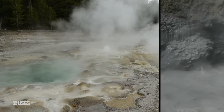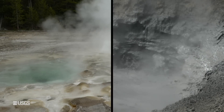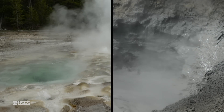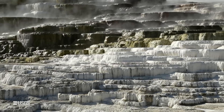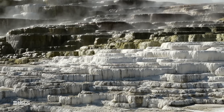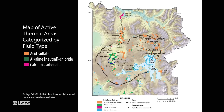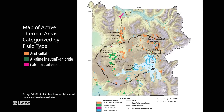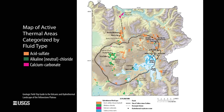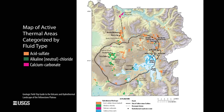Hi, everyone. I'm Mike Poland, the scientist in charge of the Yellowstone Volcano Observatory, and this is the monthly update for September 1st of 2022. We're continuing our three-part series on the different types of thermal features in Yellowstone. Last month, we were at Mammoth Hot Springs looking at travertine springs. This month, we're coming to you from Biscuit Basin in the Upper Geyser Basin near Old Faithful to talk about neutral chloride features.